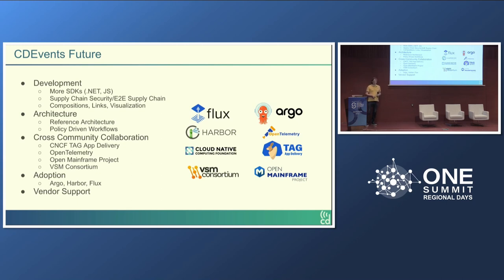In terms of the future, we are working on continued development and plan to develop more SDKs, as those are really important to integrate with tools written in different languages. The next SDKs we have planned are for .NET and JavaScript. We are also starting to focus a lot on supply chain security use cases — we have some events related to that but want to enrich the data model to account for more information in that area, like SBOMs and provenance data.